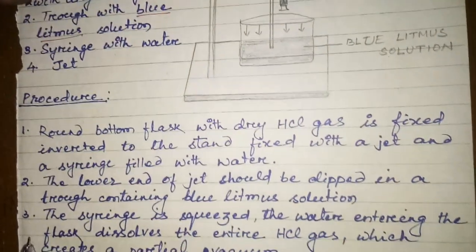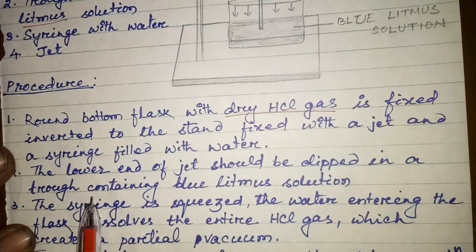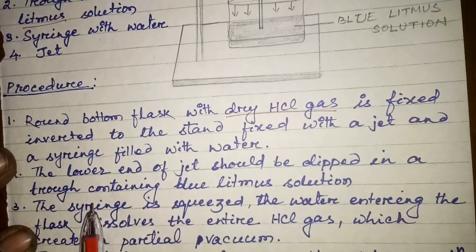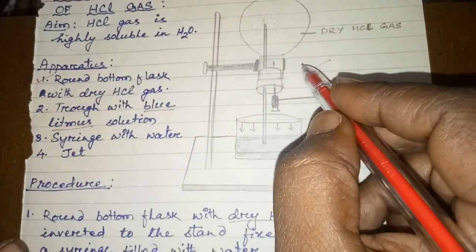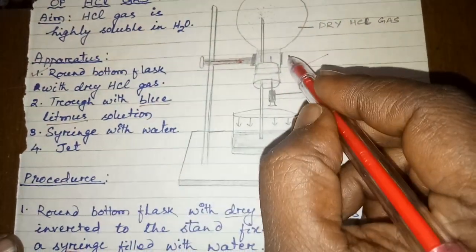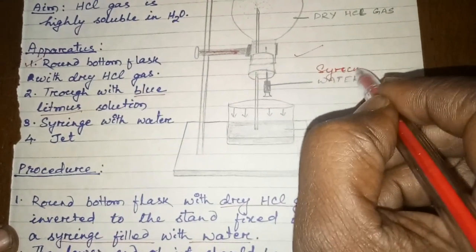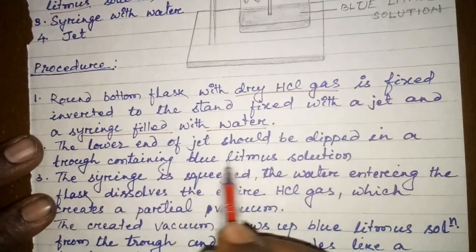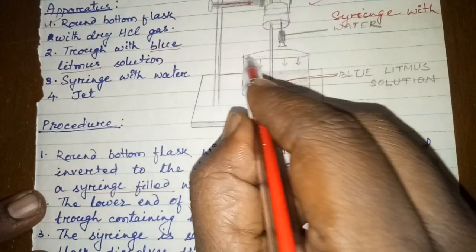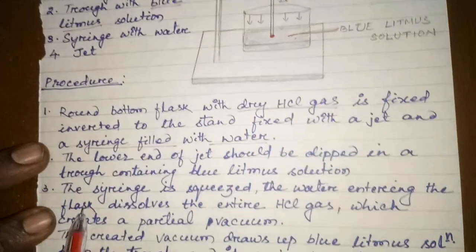The procedure: the round-bottom flask with dry HCl is fixed inverted to a stand and fitted with a jet, and the syringe is filled with water. The lower end of the jet should be dipped into the trough containing blue litmus solution. When the syringe is squeezed, water enters the flask and dissolves almost all the HCl gas present, which creates a partial vacuum inside the round-bottom flask.